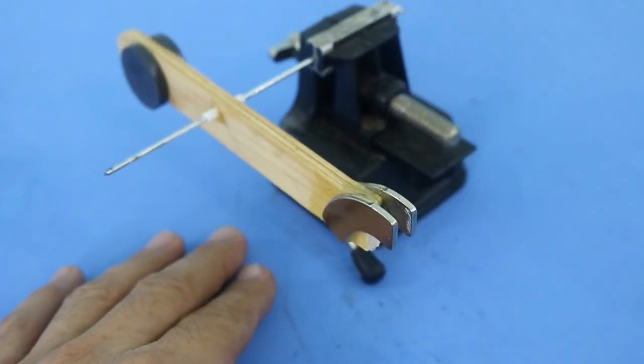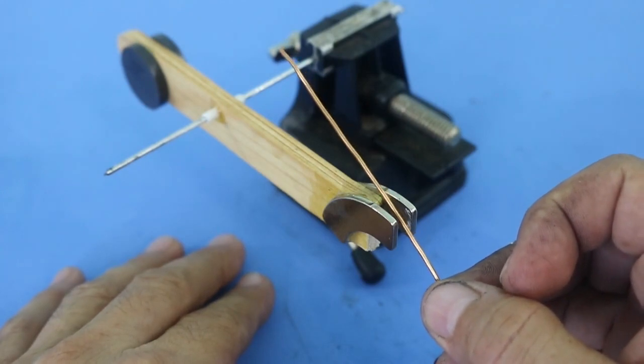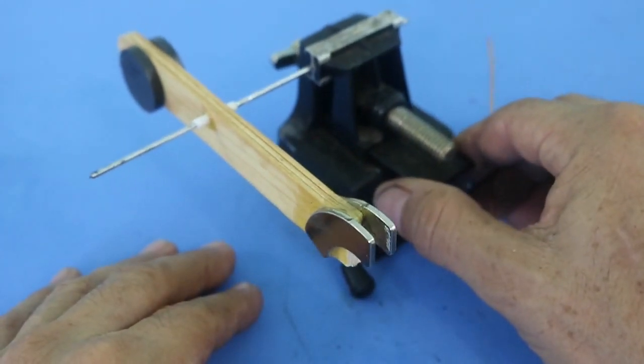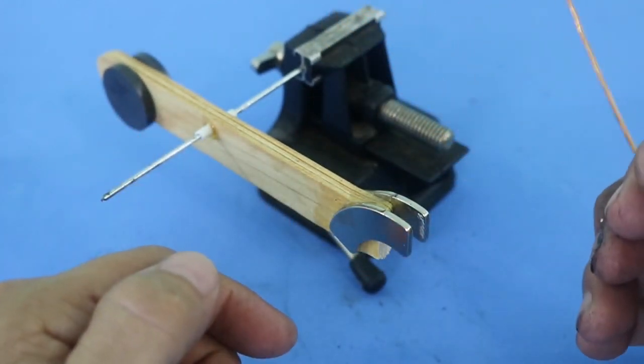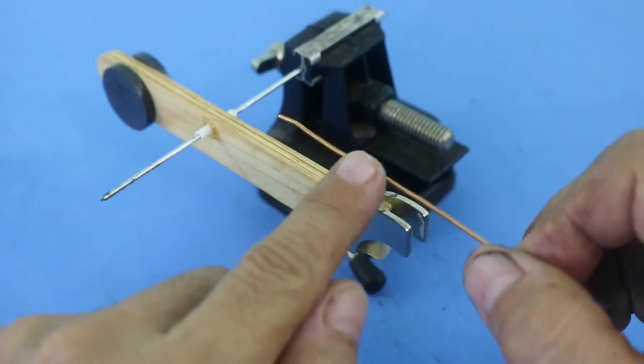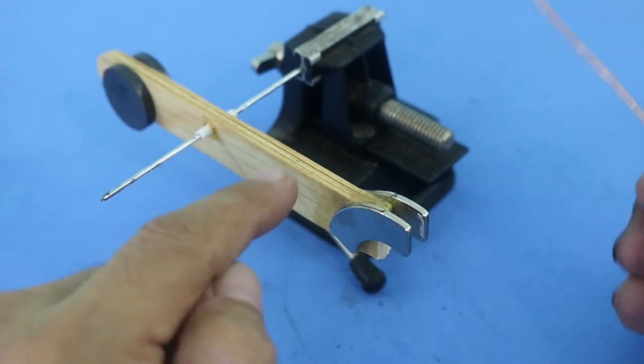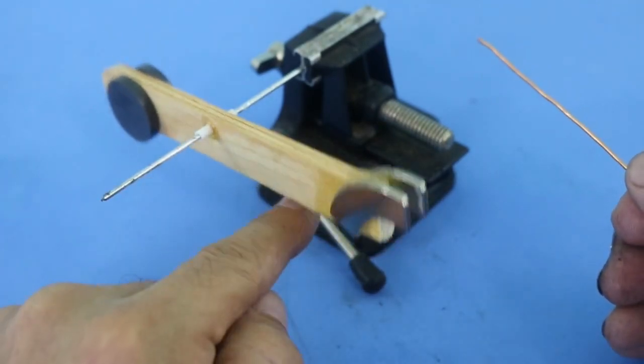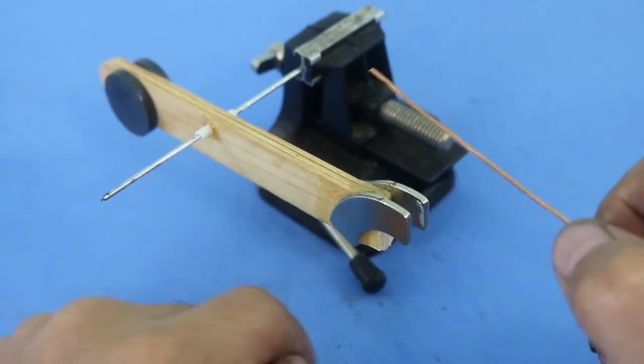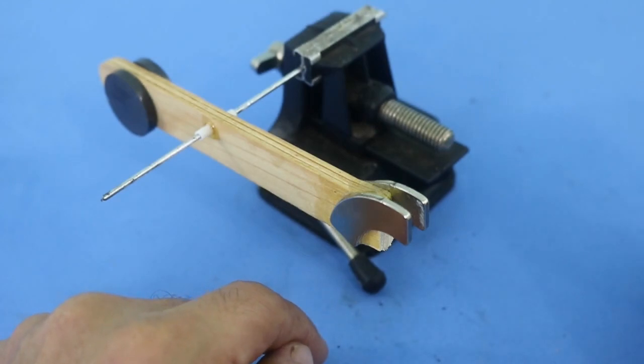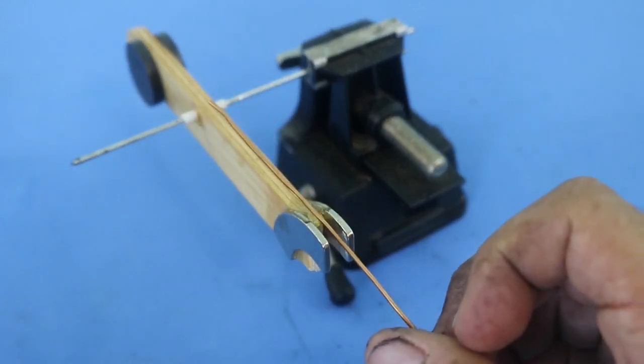So when we place a conductor in this region, it will feel a force which is the Lorentz force. And remember Newton's third law: to every action corresponds a reaction. As the conductor feels a force, also a force will be the reaction that will move the magnets, and this will oscillate up or down depending on the direction of the force, the Lorentz force. So let's see how it works.